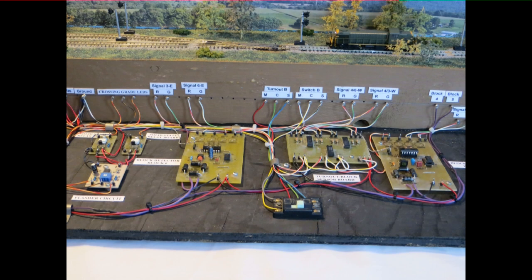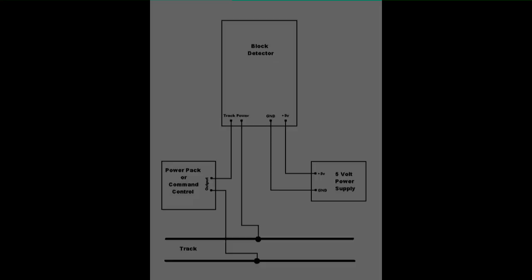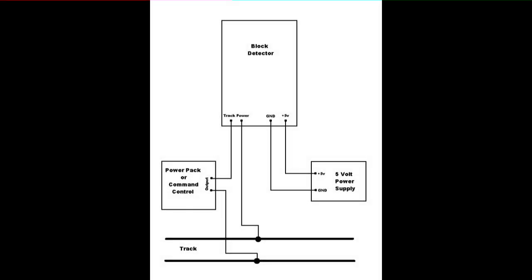Now that you have seen my circuit boards in action, it is time to show you how everything is wired together, which I will do using block diagrams. I decided to do this with several block diagrams showing everything in stages, rather than overwhelming you with one big block diagram showing all the wiring at once. I will start by showing how the inputs of the four block detectors are wired up, showing only one block detector being wired up, but the other three would be wired the same way.